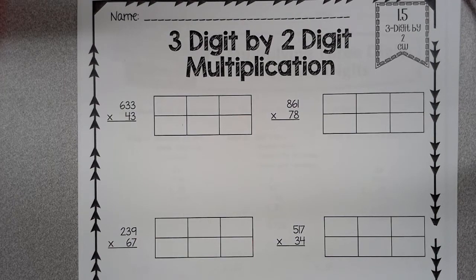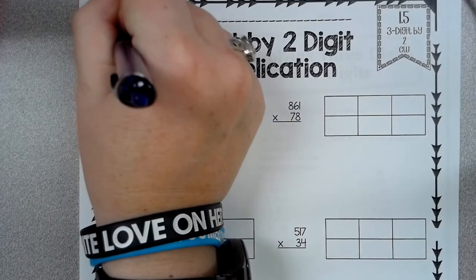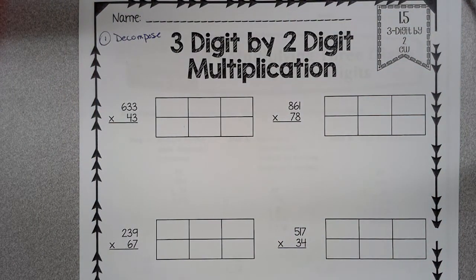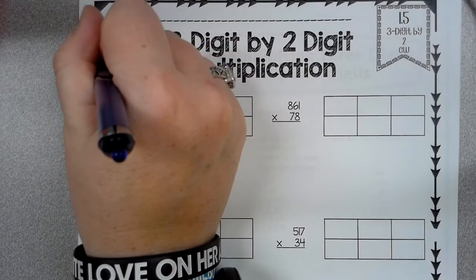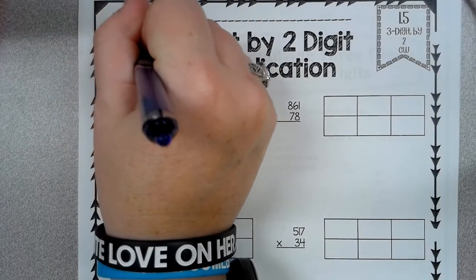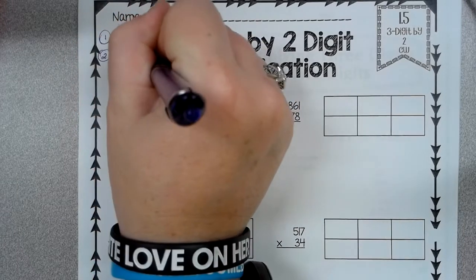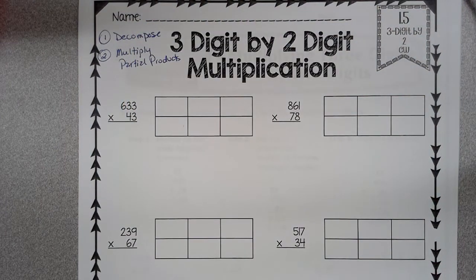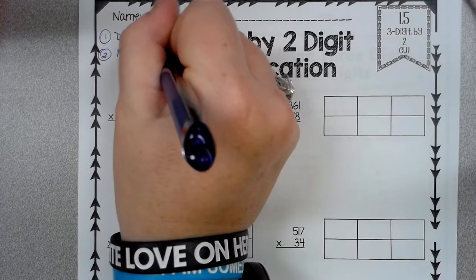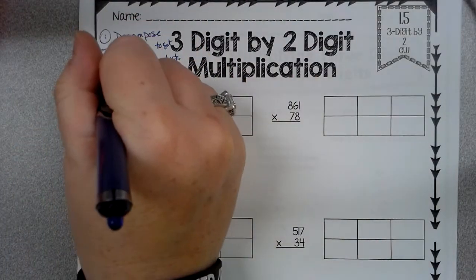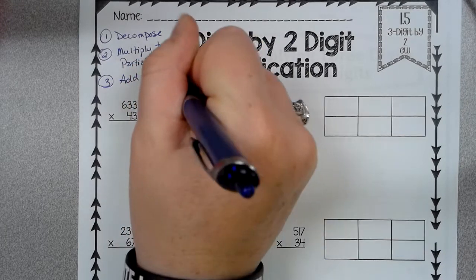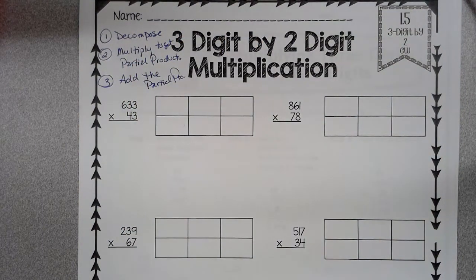So remember with the area model, the first thing you're going to do is decompose your numbers. And the second thing you're going to do is you're going to multiply to get partial products. And then the third thing you're going to do is you're going to add the partial products. So that's three steps. You decompose, multiply, and add.